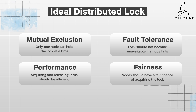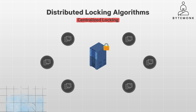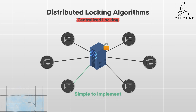Now, there are several algorithms and approaches for implementing distributed locks, each with its own trade-offs. For example, centralized locking has a single node or service that acts as a central lock manager. All nodes request and release locks through this node. It is simple to implement and easier to understand. But the central node is a single point of failure and its performance can become a bottleneck under high load.